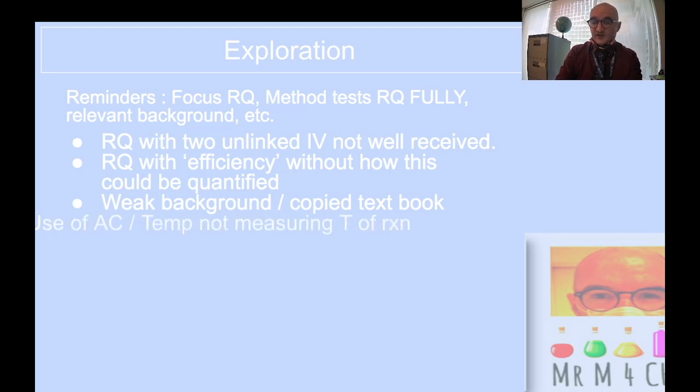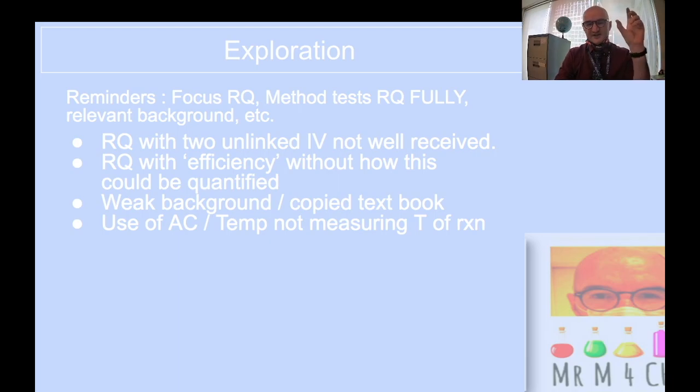Research questions that said how we're going to establish the efficiency of this or the success of this or vague qualitative words will not lead to a good IA. You need to have quantification from the research question. Weak backgrounds, as I've just been mentioning, are copied from the textbook. Lots of chunks of copied text. It's not a bad thing. We all know that what happens with the effect of catalyst or rate of reaction from an enthalpy diagram and Maxwell-Boltzmann point of view.